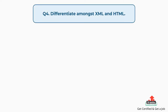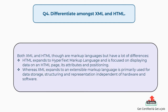Question number four: differentiate amongst XML and HTML. Both XML and HTML are markup languages but have many differences. HTML expands to Hypertext Markup Language and is focused on displaying data on an HTML page, its attributes and positioning. Whereas XML expands to Extensible Markup Language and is primarily used for data storage, structuring, and representation independent of hardware and software.